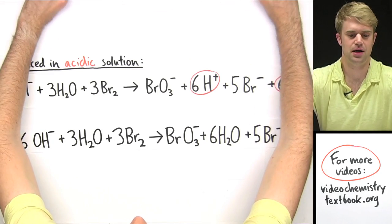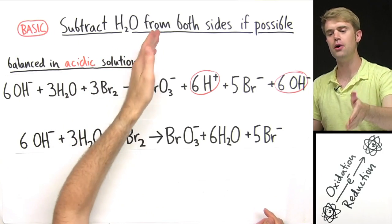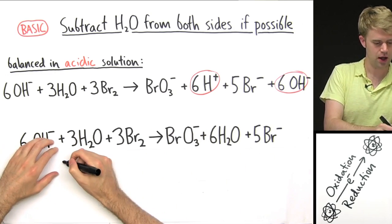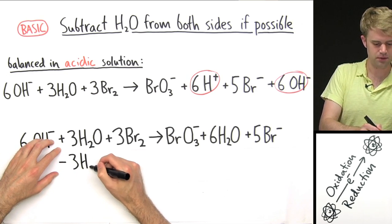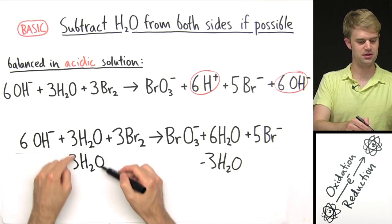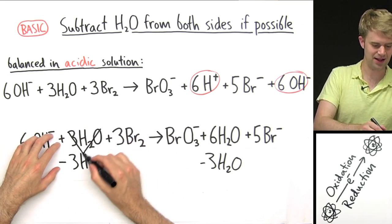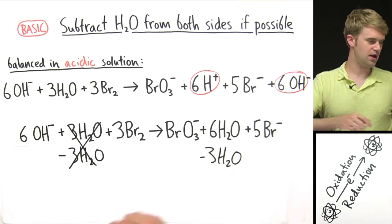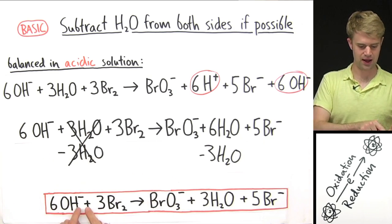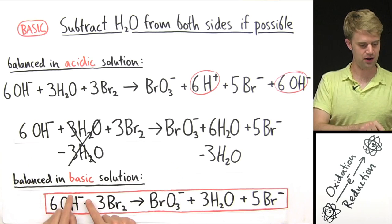Finally, the last step deals with the H₂O: subtract H₂O from both sides if possible. I have 3 H₂O here and 6 H₂O here. Just like an algebra equation, I subtract 3 H₂O from each side. Plus 3 minus 3 cancels out, and 6 H₂O minus 3 H₂O gives me 3 H₂O. Here's the final version of this equation: H₂O cancels out on one side, and I have 3 H₂O remaining on the other side. This is the equation balanced in basic solution.